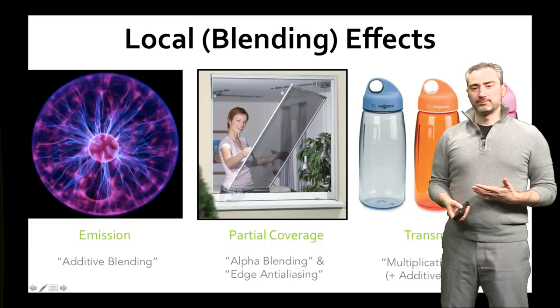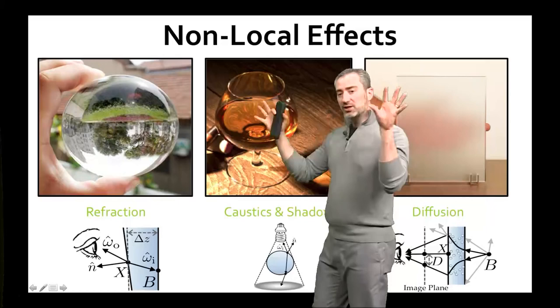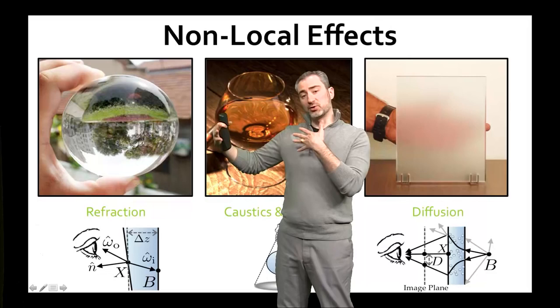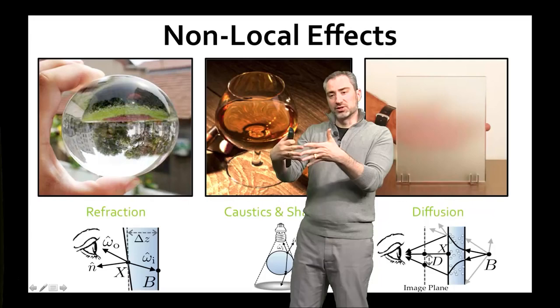Surfaces that transmit light often reflect light as well. In addition to these three local effects, there are three non-local effects where different pixels on the screen affect each other. Refraction happens where there's a change in index of refraction at an optical interface, and where if the surface is curved, we get light rays focusing.